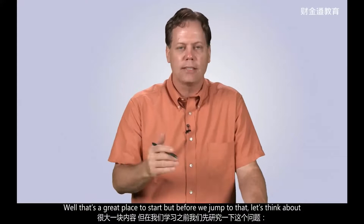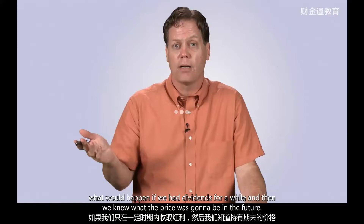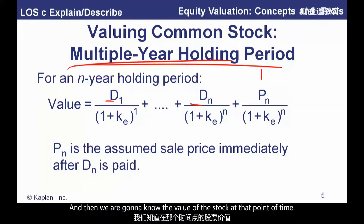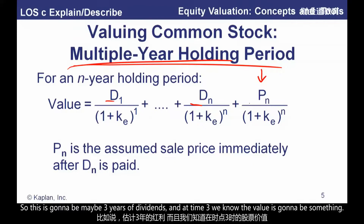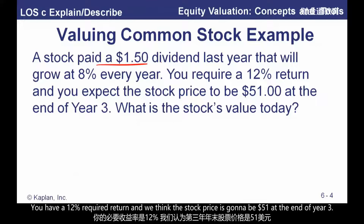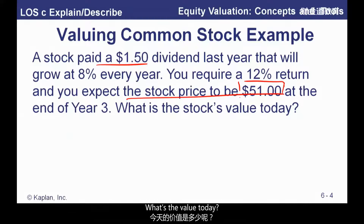But before we jump to that, let's think about what happens if we have dividends for a while and then we know what the price is going to be — that's what a multi-year holding period model is. We're going to have dividends we estimate for some number of periods, and then we know the value of the stock at that point in time. For example: stock paid a $1.50 dividend last year, and that's going to grow at 8% every year. We have a 12% required return, and we think the stock price is going to be $51 at the end of year three. What's the value today?